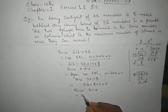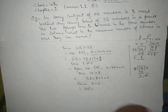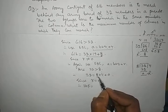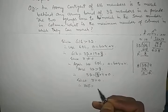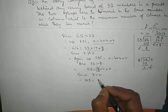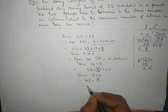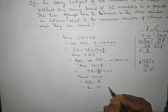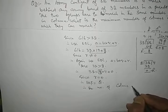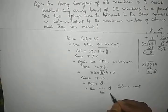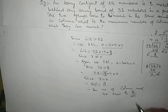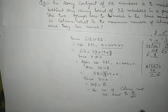Therefore, the HCF between these two numbers is the divisor when the remainder became zero, which is 8. Therefore, the number of columns must be equal to 8. So this is the right answer. Thank you so much.